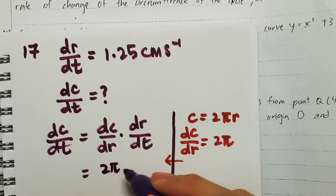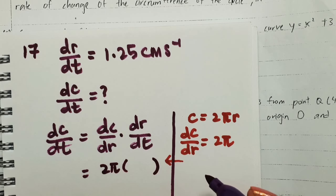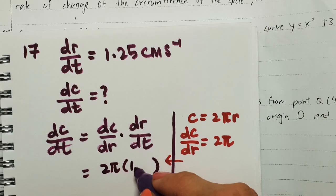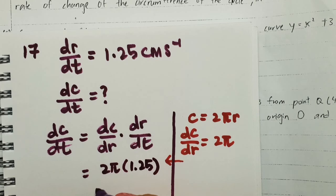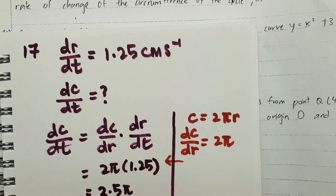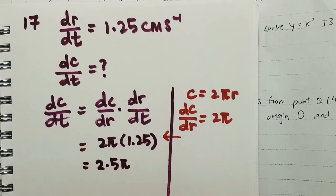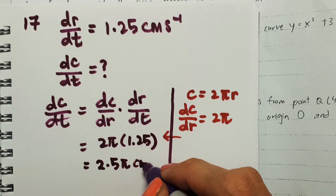And then times with the dr/dt, which is given 1.25. Now therefore, let's multiply this together. We will have 2.5π. What is the unit? The circumference is calculated in terms of cm.